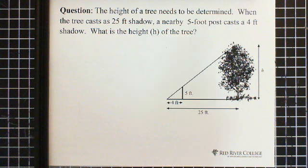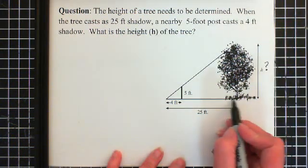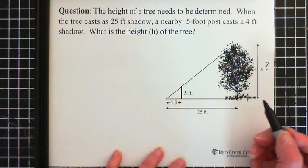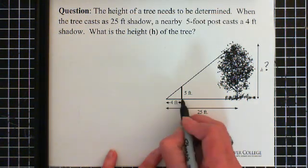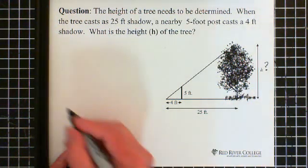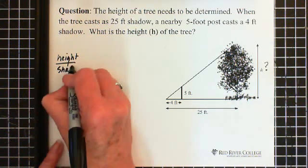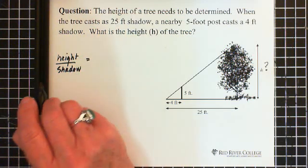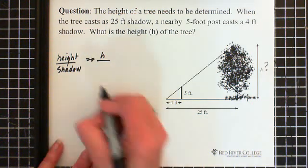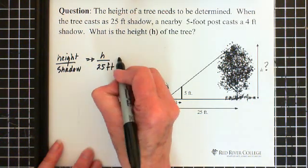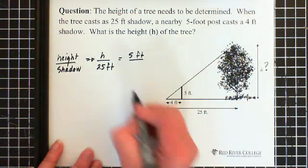Okay. So here we have height of the tree, which is our question mark. That's the thing we're looking for. And here is the shadow of the tree. The length of the shadow of the tree. Here's the height of the post. And here's the length of the shadow of the post, the 4-foot. So I'm going to set it up as height with respect to shadow. The height of the tree is our unknown. So I'm going to put it down as H. And the length of the shadow is 25 feet. And that equals the height of the post, which is 5 feet. And the length of the post's shadow is 4 feet.